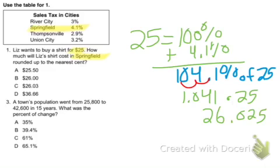This many cents. But we need to round this because we're talking about money. So that 5 makes the 2 go up to a 3. So the answer is $26.03. The answer is C.